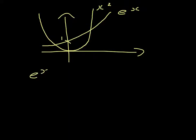With e to the x minus x squared equals 0, I'm going to let f of x equal e to the x minus x squared.